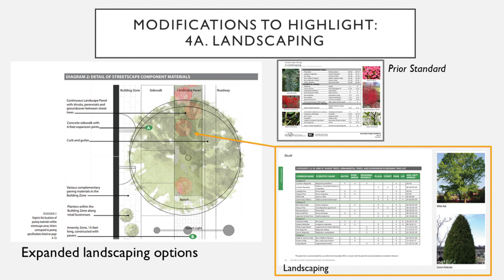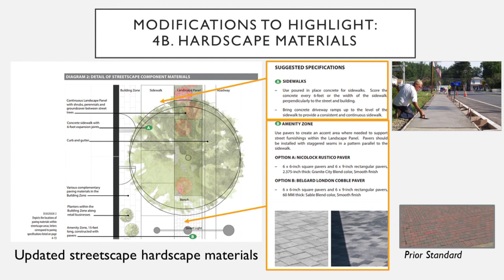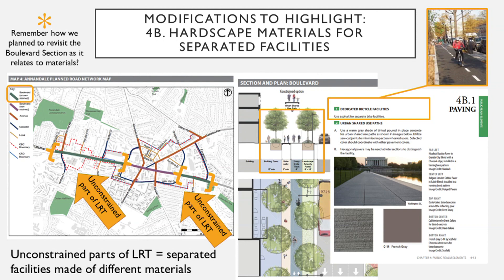Section 4B outlines the typical hardscape materials recommended for sidewalks and amenity zones in the landscape panels. The prior standard for Annandale sidewalks was brick pavers, as can be observed on roads such as Columbia Pike. However, due to maintenance and accessibility concerns associated with brick pavers, the new standard is poured concrete. In the landscape panel, trees with landscaping beds will alternate with amenity zones — small amenity areas that feature limited accent pavers and contain public realm elements such as lighting, benches, and trash cans.